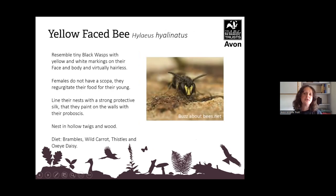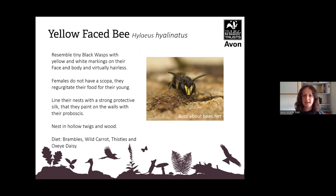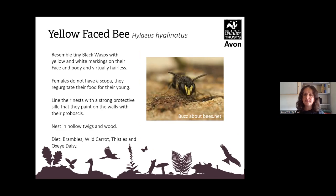The yellow-faced bee you may not know much about — it looks similar to a wasp and is virtually hairless. It does not have a scopa, which is the pollen sac on the leg, so it eats the pollen and then regurgitates it to its young. It lines its nests with a strong protective silk it produces itself, painted on the walls with its proboscis. It nests in hollow twigs and wood, and its diet consists of brambles, wild carrot, thistles and oxeye daisy among other things.